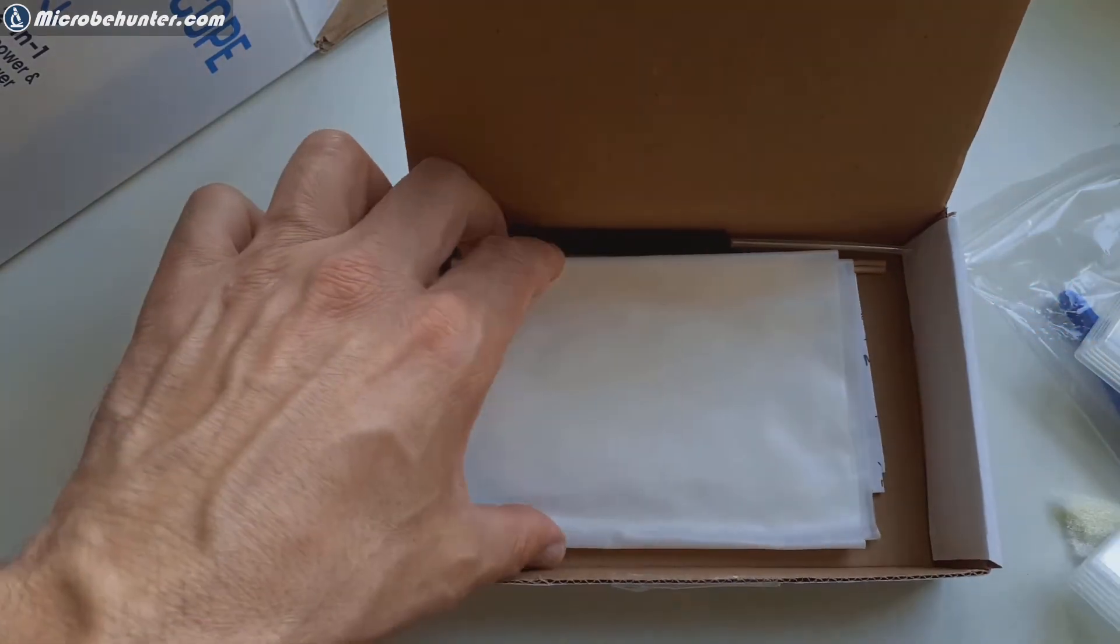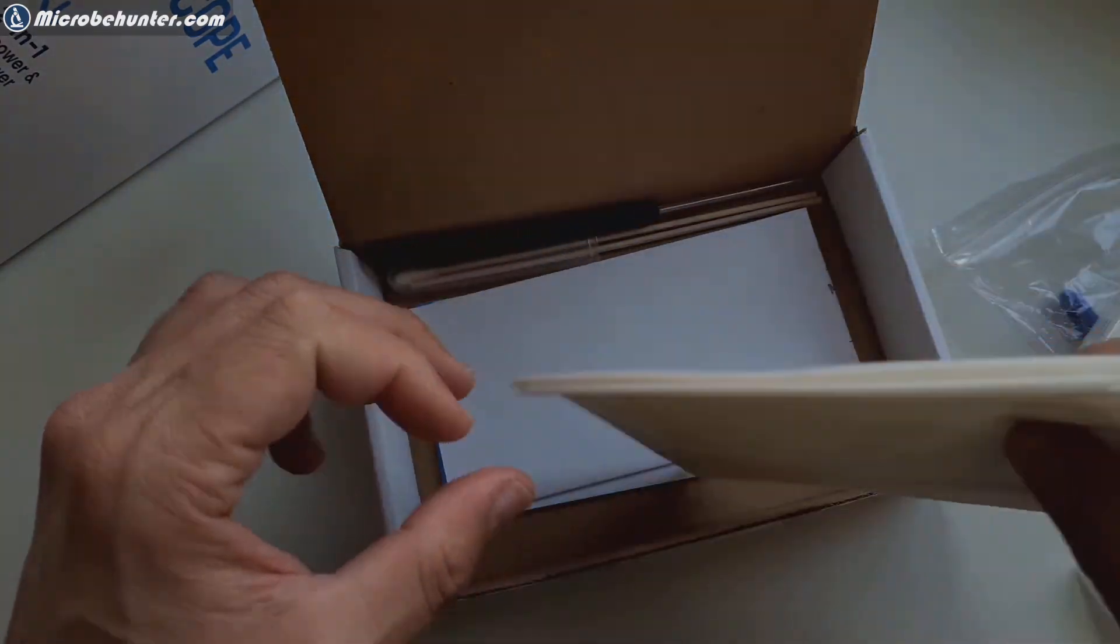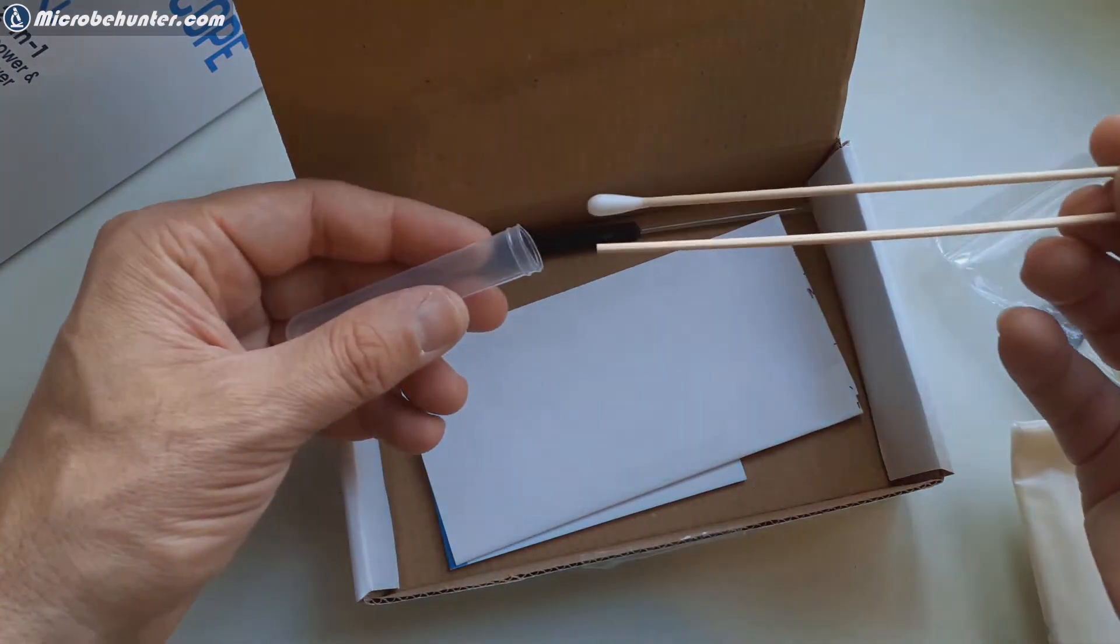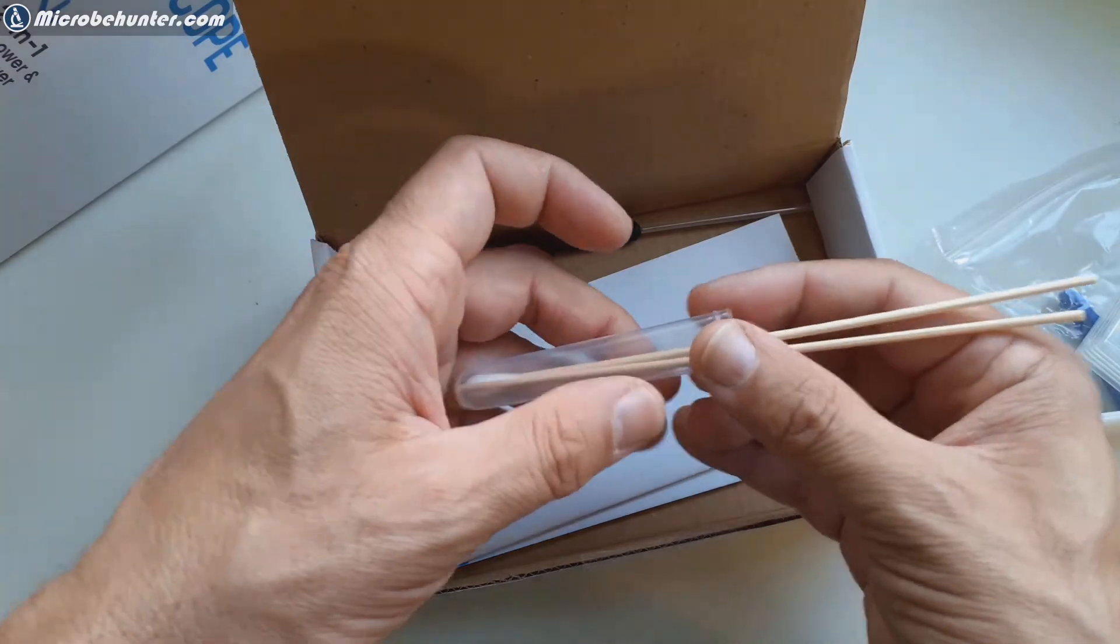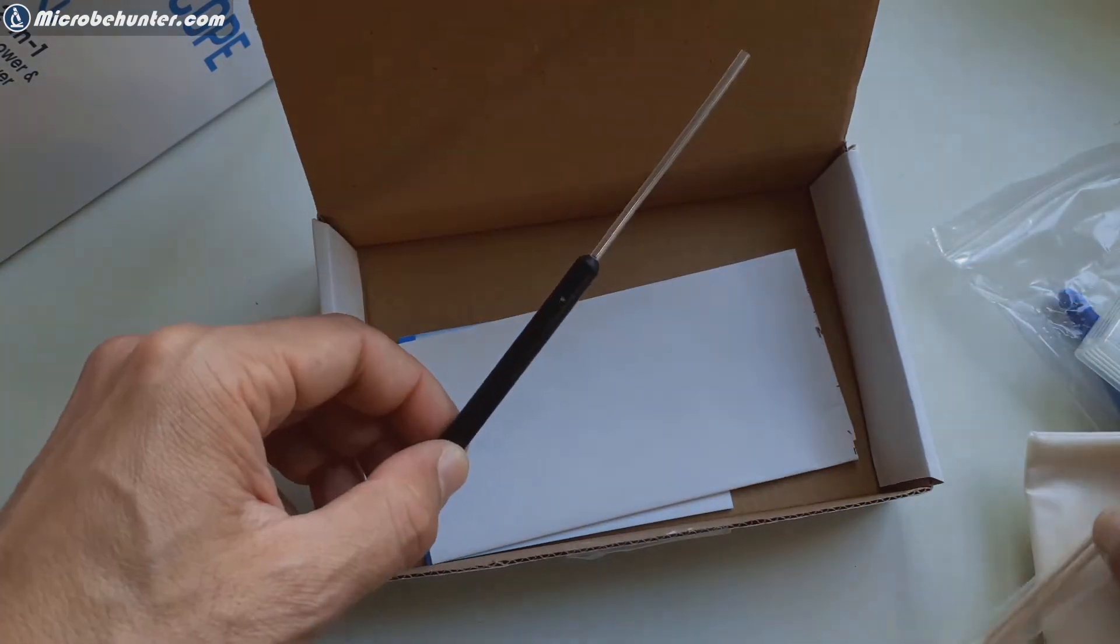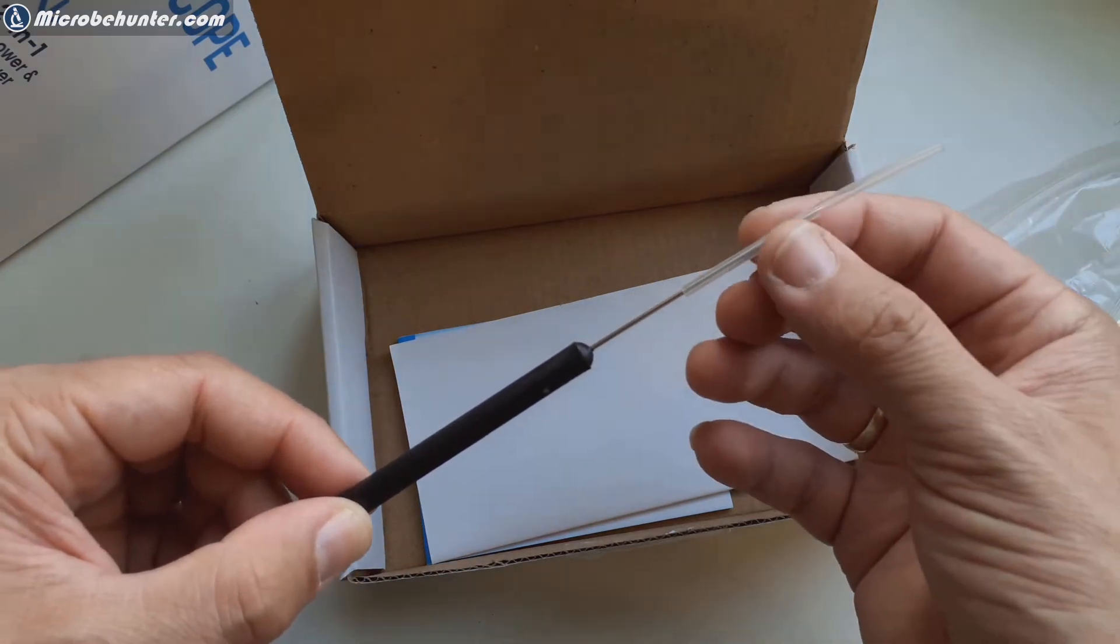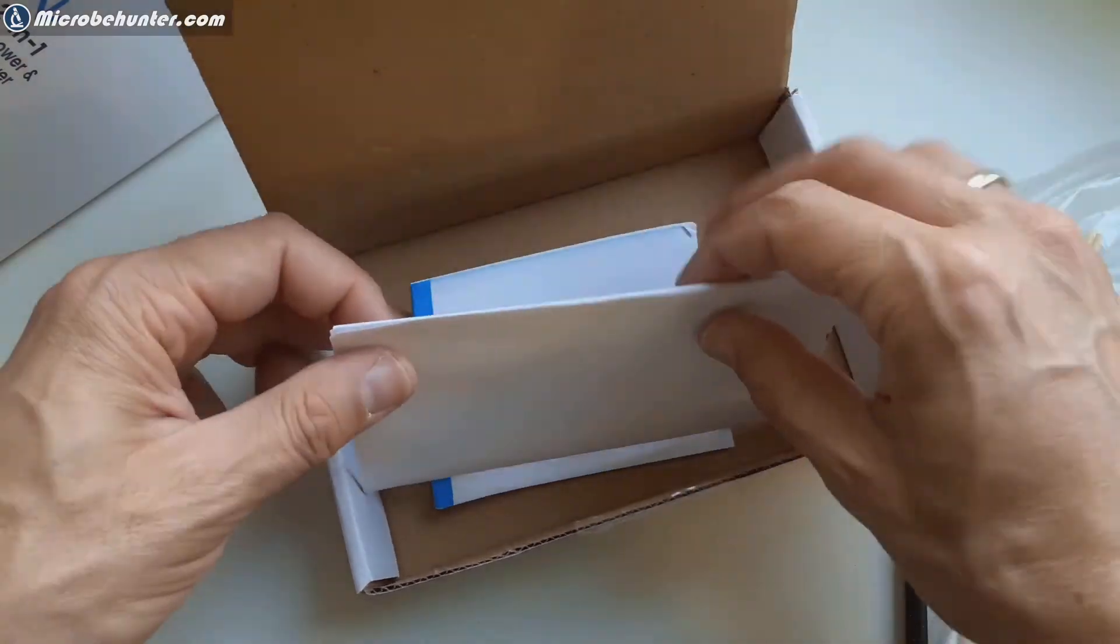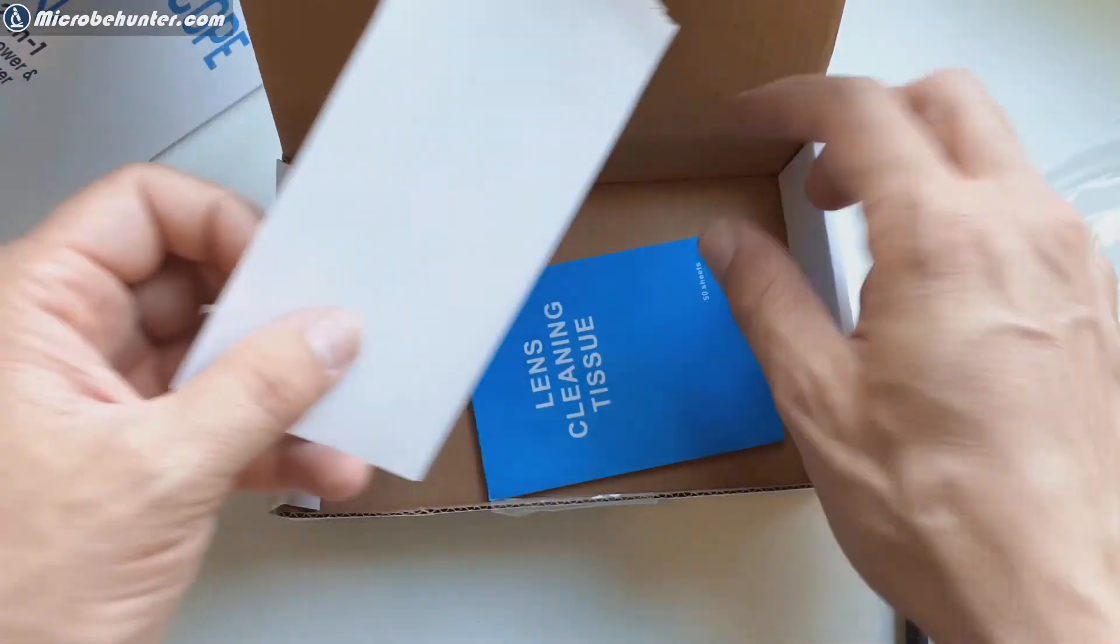So this here is a dust cover to keep the microscope clean and some more tools for example for taking samples from the inside of the cheek using the cotton swab and this is called a teasing needle. There is a protective plastic tube over it otherwise you might hurt yourself because it's quite pointed and sharp and this needle is used to separate for example algae and other difficult to separate specimens.